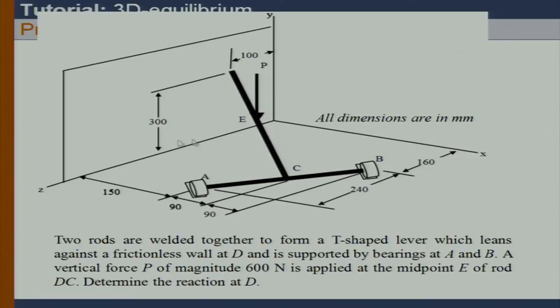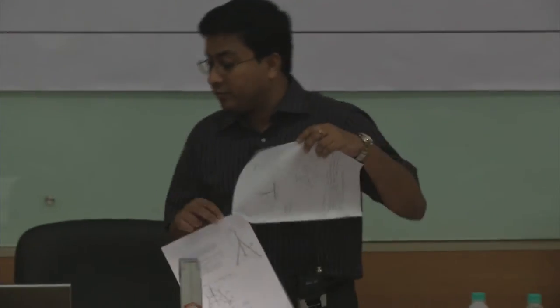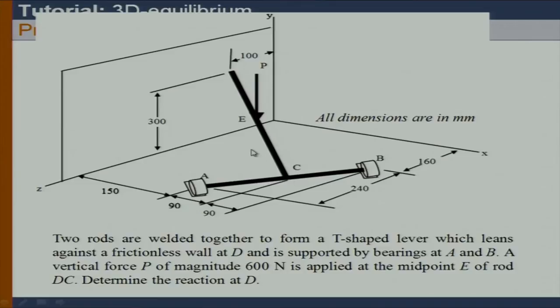We need to find the distance here. If we create a point F here, we need to find F-C, which is the perpendicular distance from C to the wall. Once we know that distance, this problem can be solved very easily — that's the hint. The distance D I was talking about is actually the perpendicular distance from C to the wall, and that distance is very, very important.